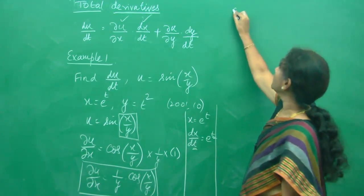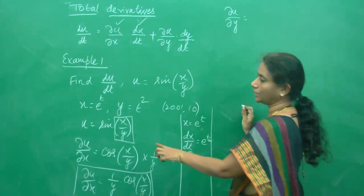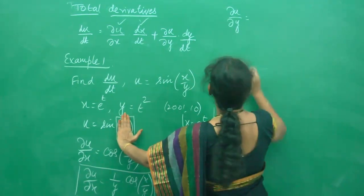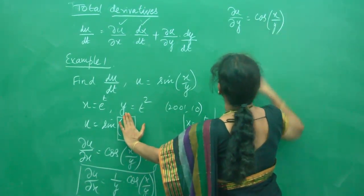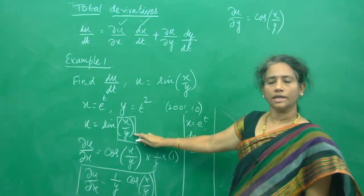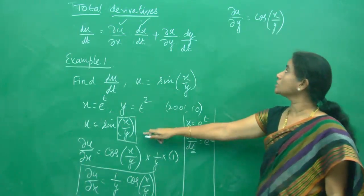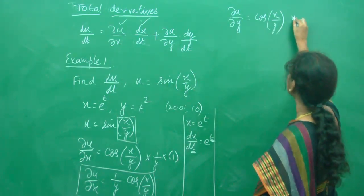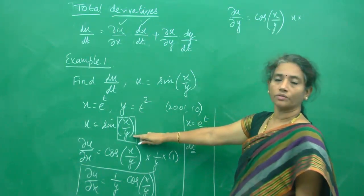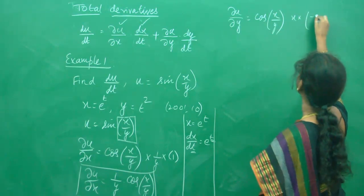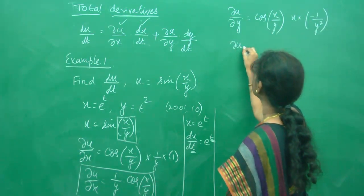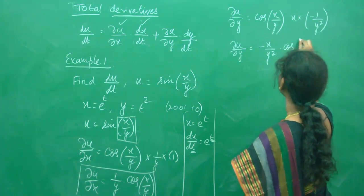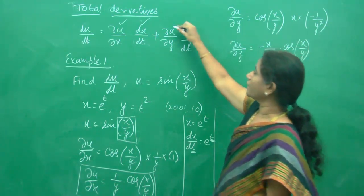Now let us do ∂u/∂y. We differentiate u = sin(x/y) with respect to y. Again by the chain rule, sine of something gives cos(x/y). This time x is the constant, so we write x as it is and take the derivative of 1/y, which is −1/y². Therefore, ∂u/∂y = −(x/y²) cos(x/y).